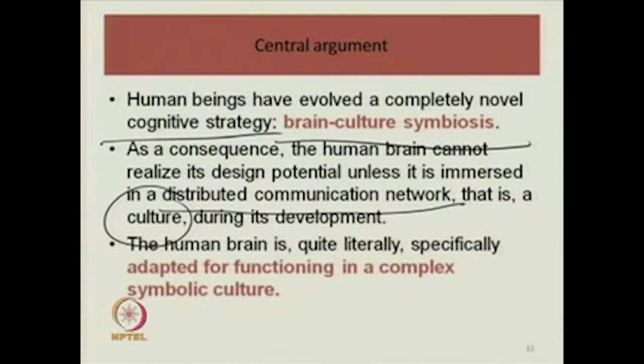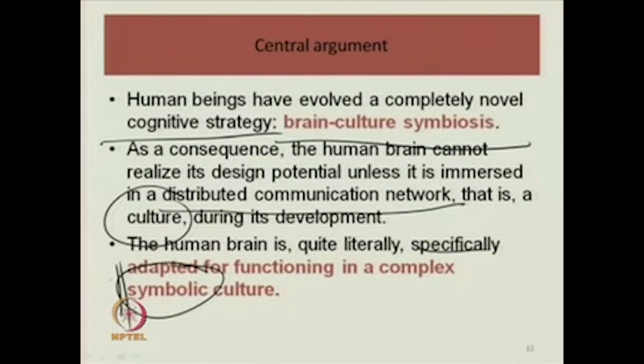Donald says the human brain is quite literally specifically adapted for functioning in a complex symbolic culture. This is very important. We have something called symbolic thought. The capacity for symbolic thought — that is, the capacity for cognizing the world and retaining things about the world in our memory using symbols — is a major breakthrough in our evolutionary history. It eventually allowed us to have mathematics and language.